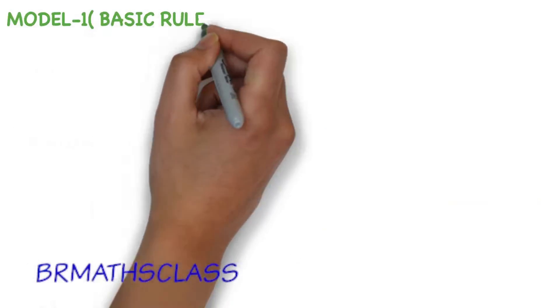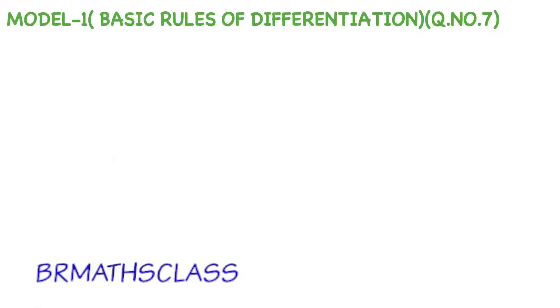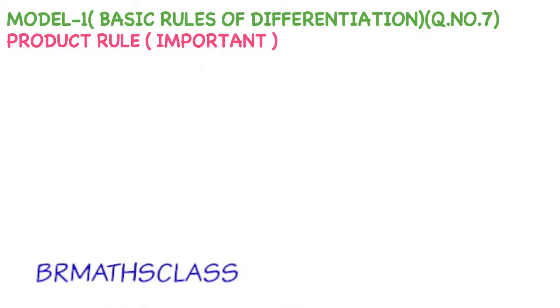Model 1. Basic Rules of Differentiation. Question number 7. Product Rule. Very important formula in derivatives chapter. We will use this very frequently throughout this differentiation chapter.